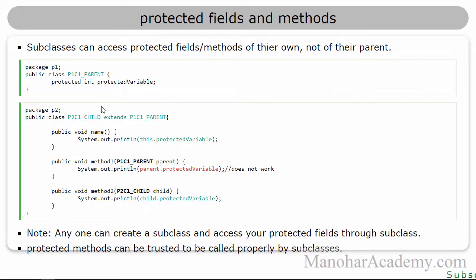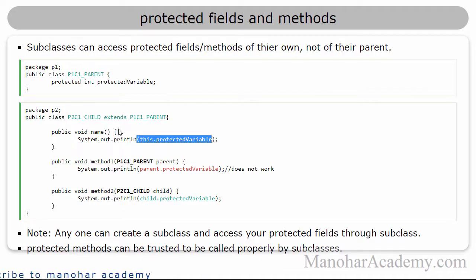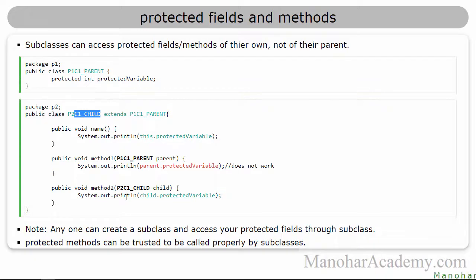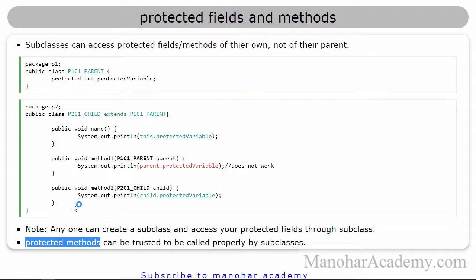This is to make sure no one will create subclasses just to peek into the parent class variables. But still, whenever you have protected variables, other programmers can start creating subclasses and directly access those variables in the subclass. They can't peek into the parent class, but nonetheless they can start using those variables in the child class. This is not encouraged because it breaks encapsulation, so protected fields are not preferred at all. But protected methods are kind of okay, because private methods are most of the time helper methods supporting the behavior shown through public methods. Protected methods can be trusted to be called properly by subclasses. So protected methods are okay, but protected fields are not okay because they break encapsulation.